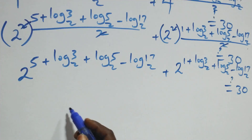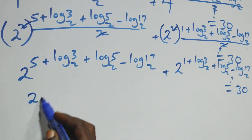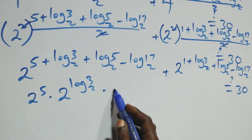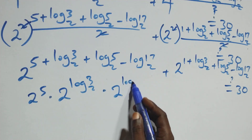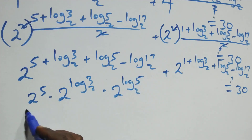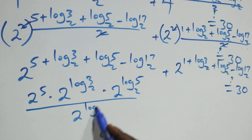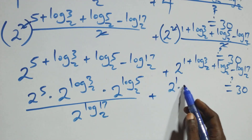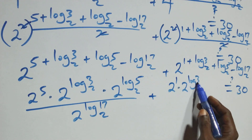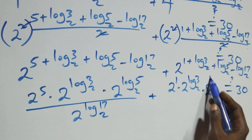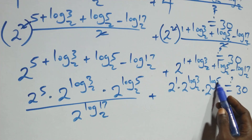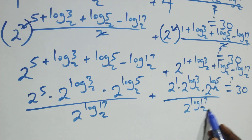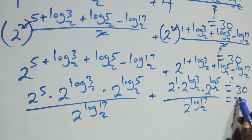Using the law of indices, we split this as: 2^5 × 2^(log₂3) × 2^(log₂5) ÷ 2^(log₂17), plus 2^1 × 2^(log₂3) × 2^(log₂5) ÷ 2^(log₂17), equals 30.